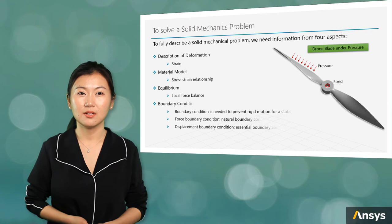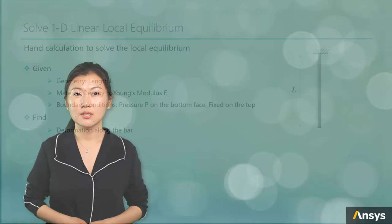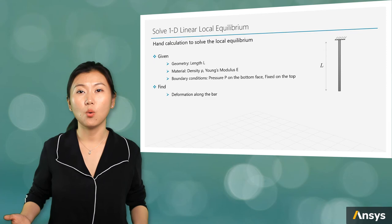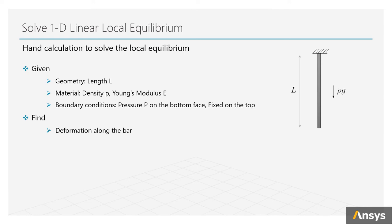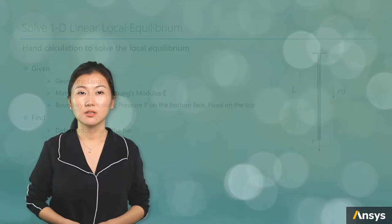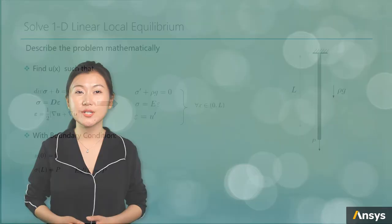Let's try to solve a very simple 1D problem manually and see how the mentioned information is used. Say we have a one-dimensional bar with length L. One end of it is fixed and the other end is under pressure P. For the material, it's a simple linear material with Young's modulus E and density rho. And here, what we want to solve is the deformation everywhere over the bar.